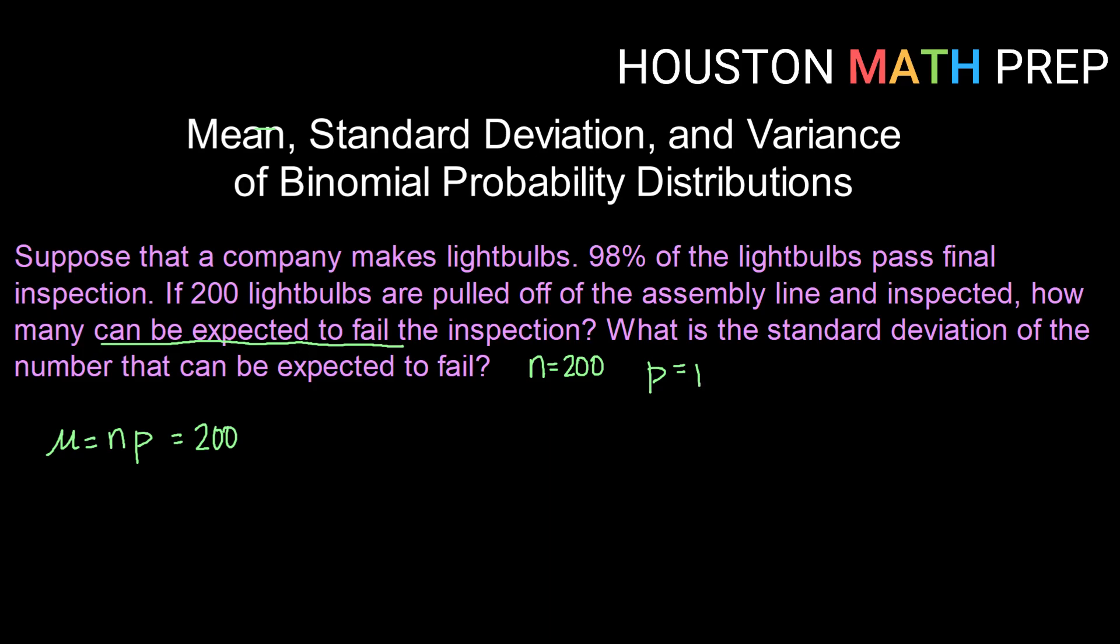And here, p is going to be the probability of failing inspection. So although we might typically equate success with passing inspection, here what we're being asked about is failing inspection. So we're going to equate p with probability of failing inspection. Well, since our bulbs have a 98% chance of passing, they would have a 2% chance or a 0.02 probability of failing inspection. So taking 200 and multiplying by 0.02, we would expect 4 light bulbs to fail inspection.